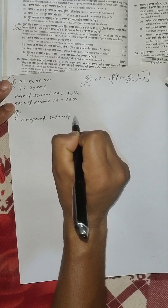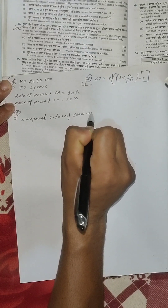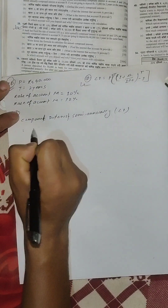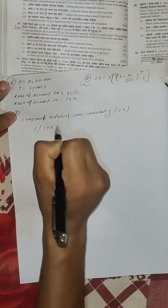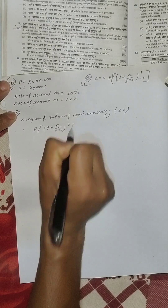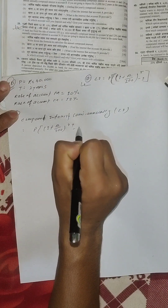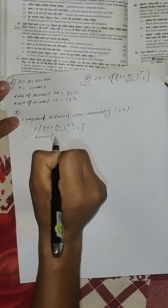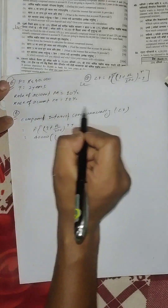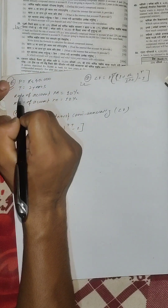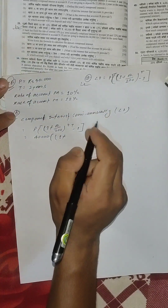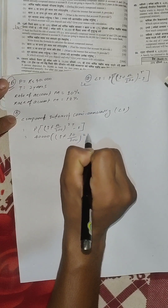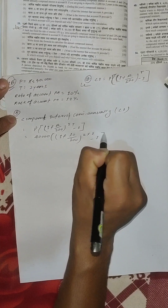Compound interest semi-annually. What is the formula? P times (1 plus r over 200) to the power 2t, minus 1. The P value is 40,000. 1 plus r over 200, to the power 2t. The r value is 10, open 200. 2 into t, the value of t is 2, minus 1.